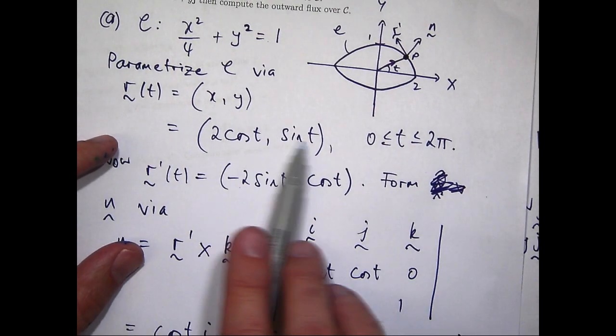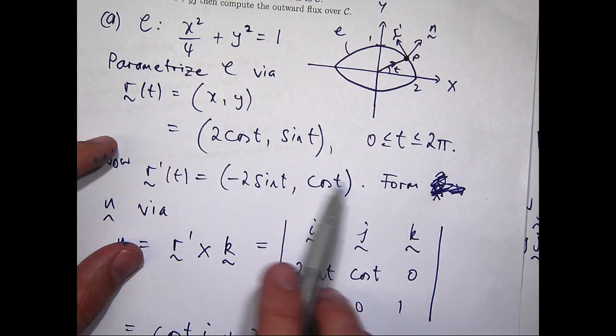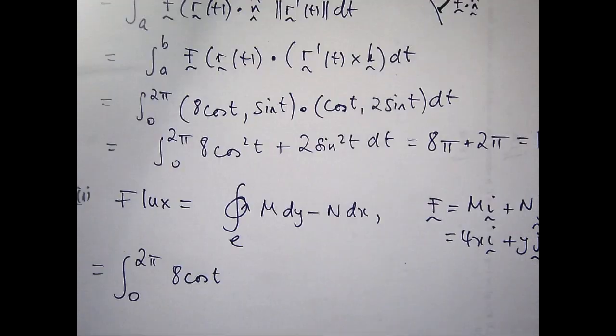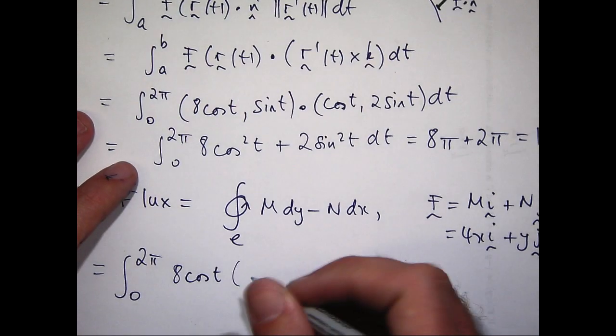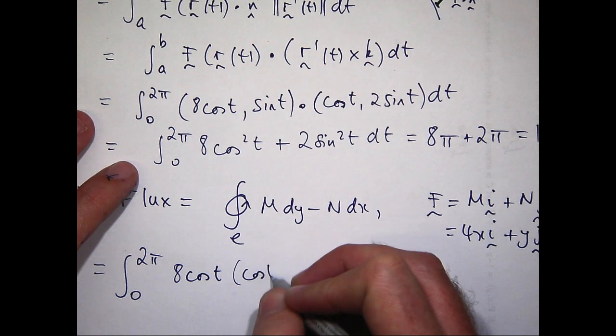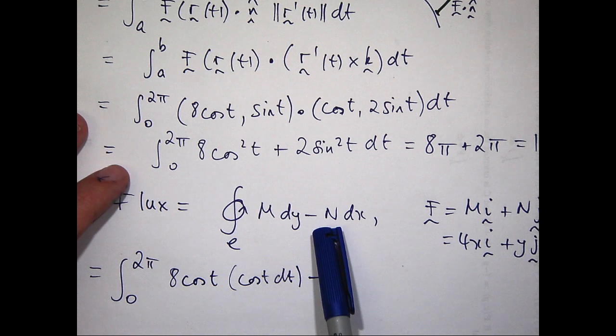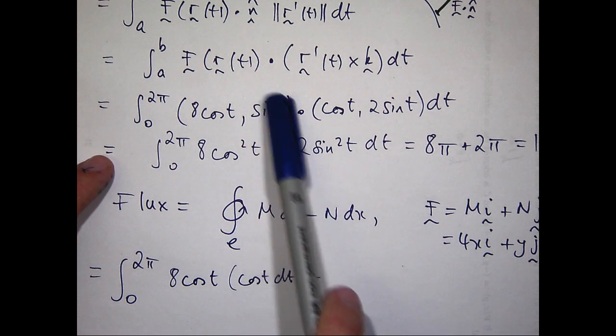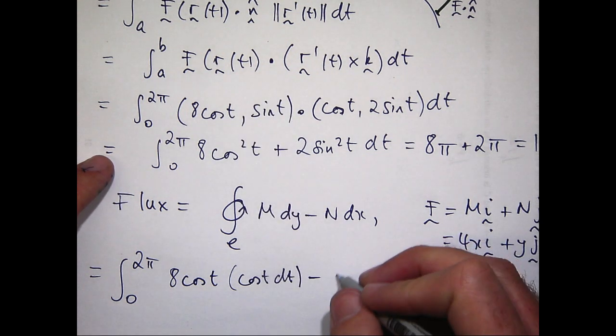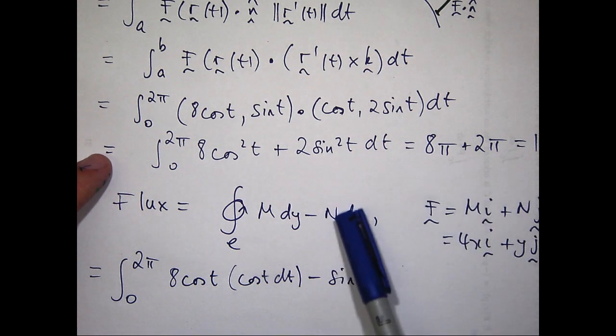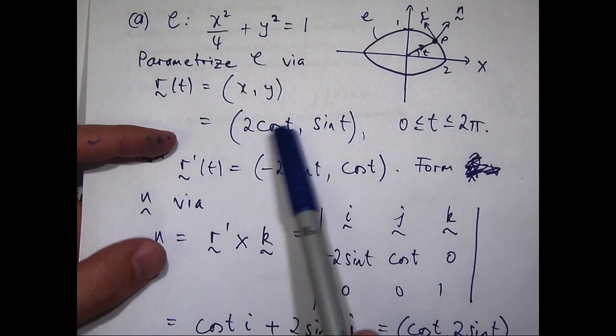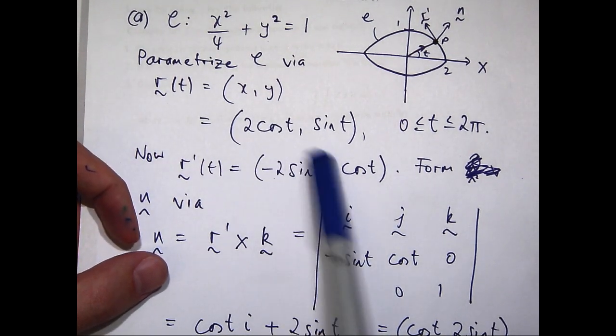So essentially it's just that dt. So we've got sin t, and dx, well, that would just be, if x equals 2 cos t, dx is just that dt.